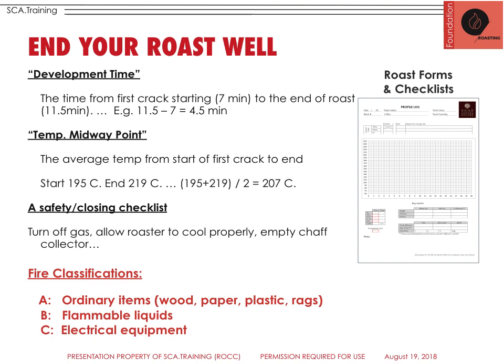There's also a temperature midway point. We have turning points, temperature midway points, and various temperatures recorded throughout the process. This would be an average temperature from the start of first crack to the end. The roaster's job is constantly to evaluate whether the speed they're progressing at is accurate for their target roast profile. For example, if first crack started at 195°C and ended at 219°C, you add 195 plus 219 and divide by 2, giving an average midway point of 207°C.